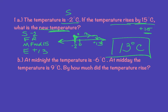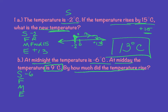This next problem, you need to be careful — it's a little bit different. At midnight, the temperature is negative 6 degrees Celsius. Start, face, move, end. I'm starting at negative 6. At midday, the temperature is 9 degrees Celsius. By how much did it rise? Normally it tells us what to do in the middle — the first problem tells us it rises by 15. That's not what's happening here. It's telling us the beginning and the end: it starts at negative 6 and it ends at positive 9. So this is going to look a little bit different than anything we've really practiced so far.